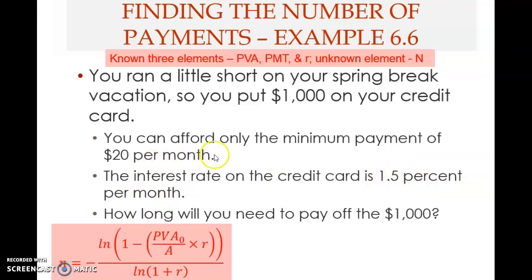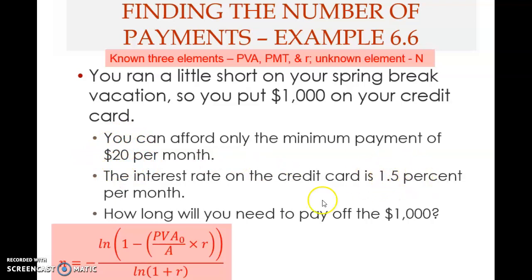This is the effective rate for one month. The question is: how long do you need to pay off the loan of one thousand dollars? The known elements are: the present value of the annuity — the one thousand dollars borrowed; the payment of twenty dollars per month; and the interest rate of 1.5 percent per month. The unknown element is n — how long you need to pay.